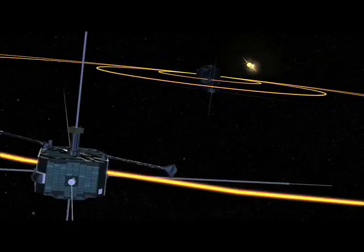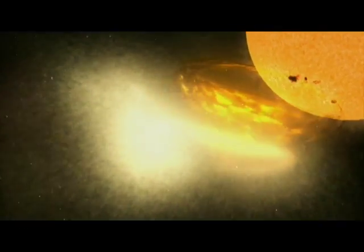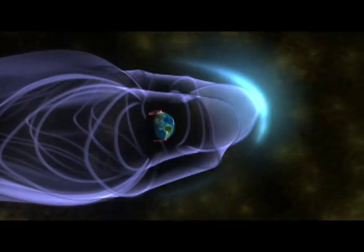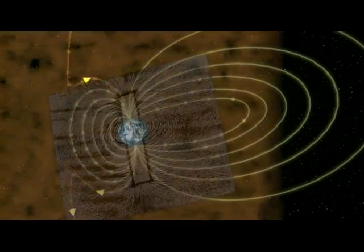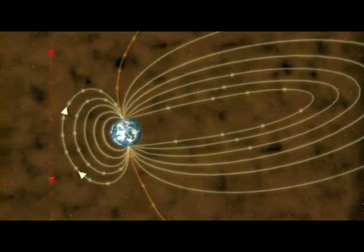NASA's Themis mission has overturned a long-standing belief about the interaction between solar particles and the Earth's magnetic field. The Earth's magnetic field is like a giant bar magnet. This magnet forms a protective field around the Earth, shielding us from the solar wind that is constantly streaming towards Earth.